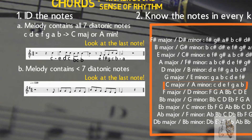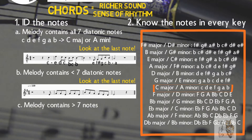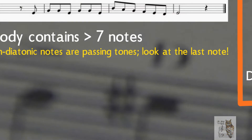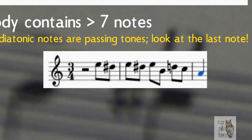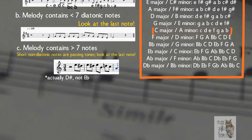The third case: your melody contains more than seven notes, or is with sharps or flats where they shouldn't be. Remember that short, quick notes are maybe passing tones. Let's take an example from the classics. You see that E flat is a passing tone — the key is actually A minor.